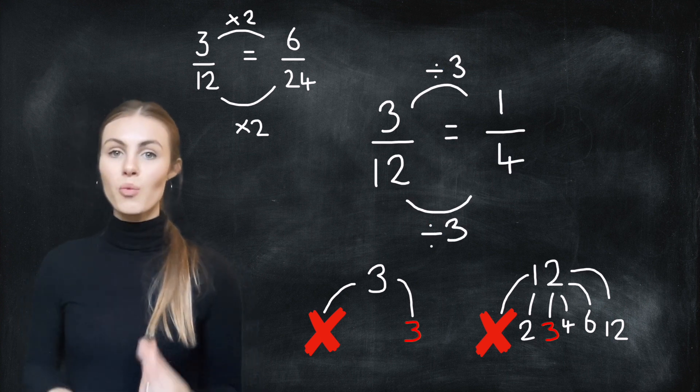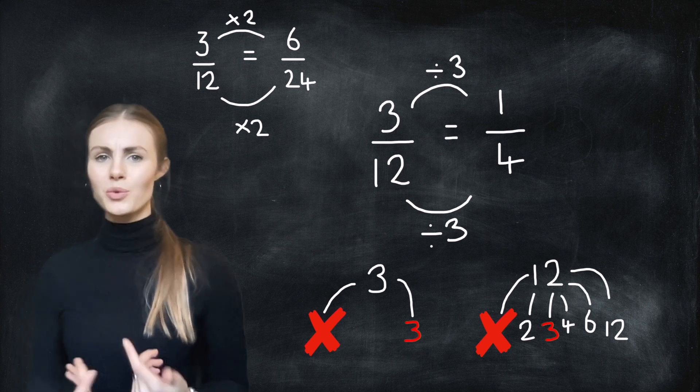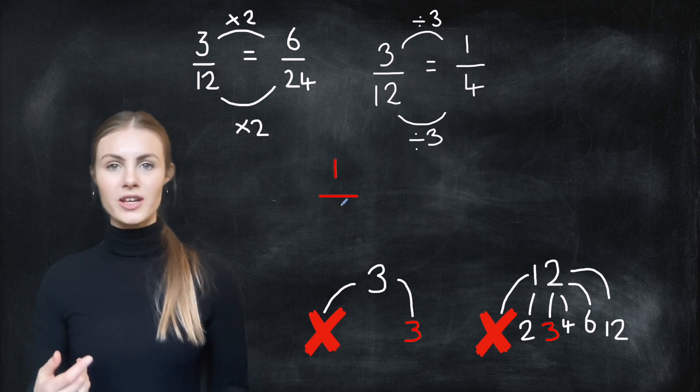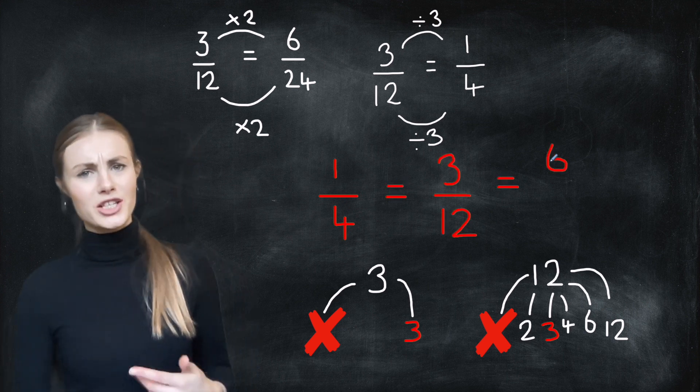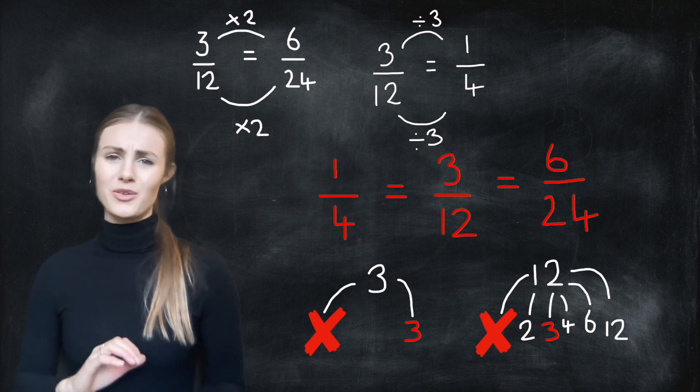Let's write that as a fraction. We've got one over four which is one quarter. We now can see that one quarter is equivalent to three twelfths. That also happens to be equivalent to six twenty-fourths, but one quarter is just so much easier to deal with.